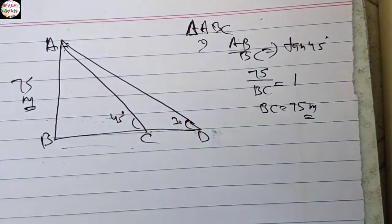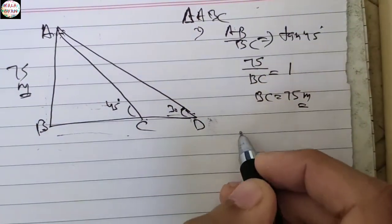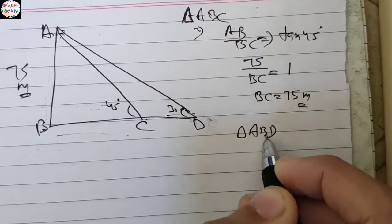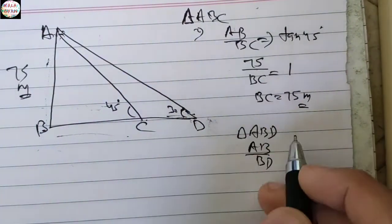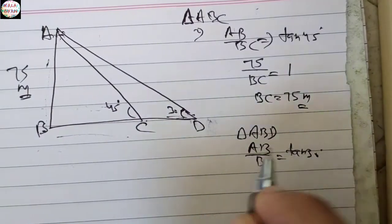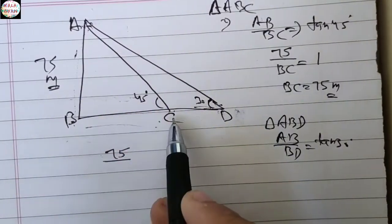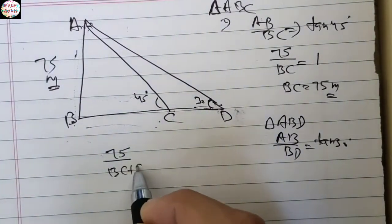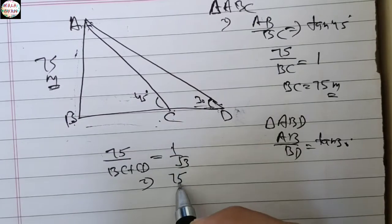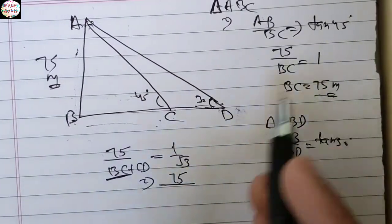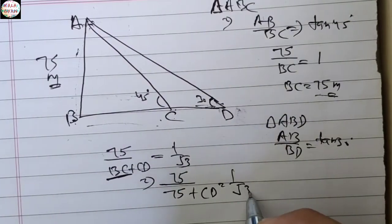अब हम लेते हैं angle ABD — यानी overall triangle A, B और D। इसमें AB upon BD — perpendicular upon base — tan की property होती है। theta given है 30 degree। AB given था 75। BD बना है BC plus CD से। tan 30 की value है 1/√3। तो 75 upon (BC + CD) = 1/√3, जहाँ BC की value 75 है।